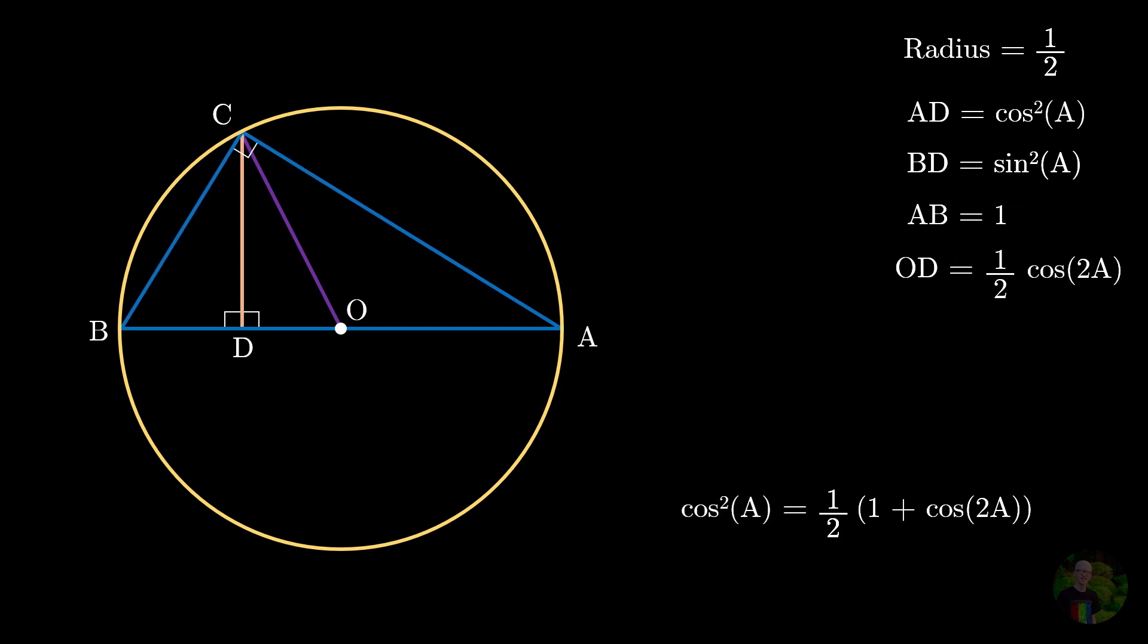Hopefully, it was not that complicated. And we can very easily find the relation of sine squared A as well, which is BD. And to find it, we know the radius OB is 1 half. We also found out that OD is 1 half cos 2A. So, if we subtract OD from the radius, we will get the value of BD, which is sine squared A, as 1 minus cos 2A divided by 2.